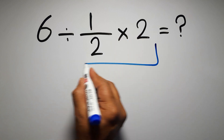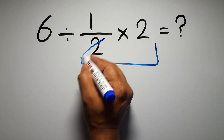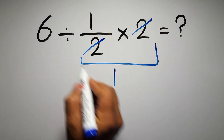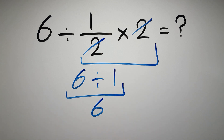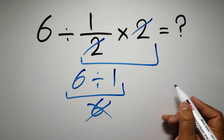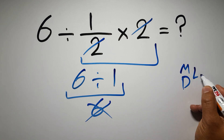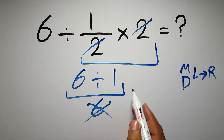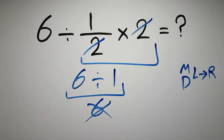First, we do this multiplication: 1 over 2 times 2. We can easily cancel this 2 and this 2, so we have just 1, and 6 divided by 1 gives us 6. But this answer is not correct, because according to the order of operations, multiplication and division have equal priority and we have to work from left to right. If we do this multiplication before this division, it is wrong.